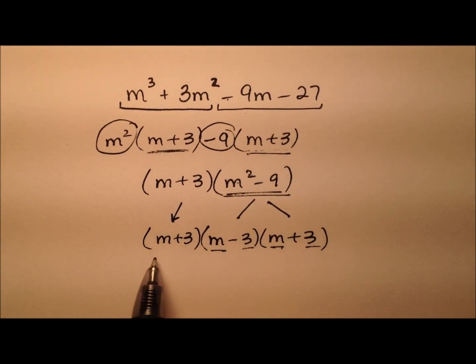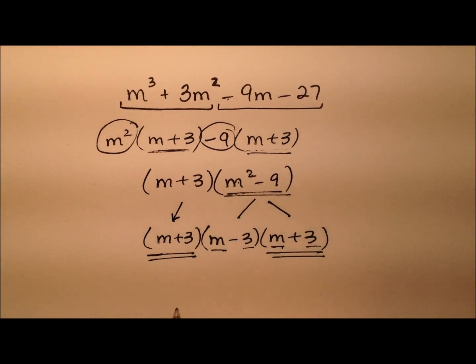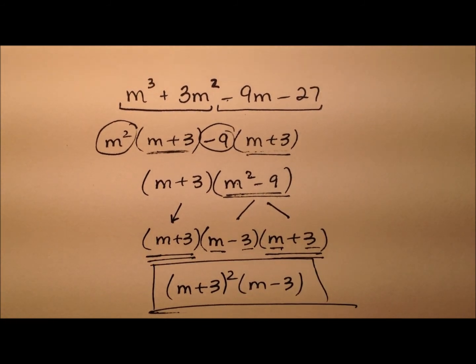And what we notice now is I actually have two m plus 3 factors. So I can say m plus 3 squared times m minus 3. And here is the fully factored form for this original algebraic expression.